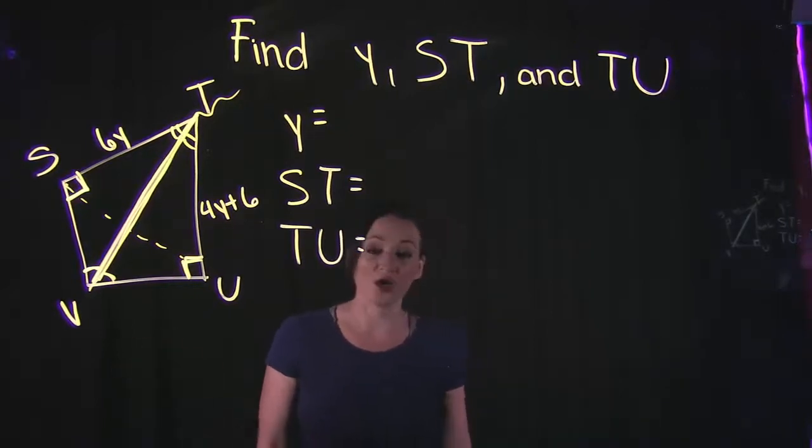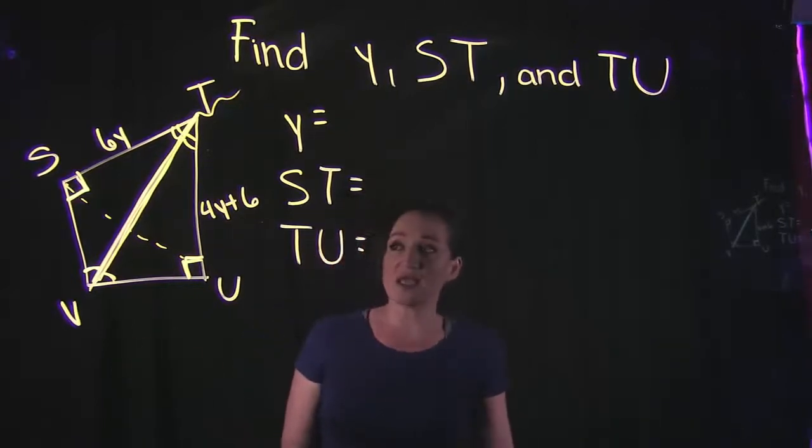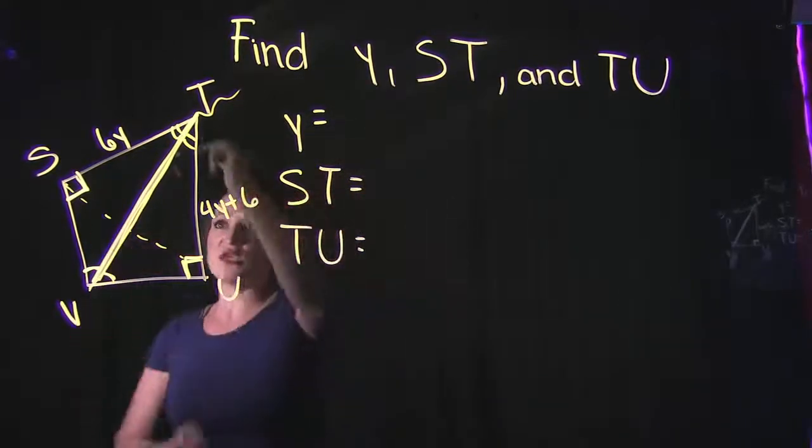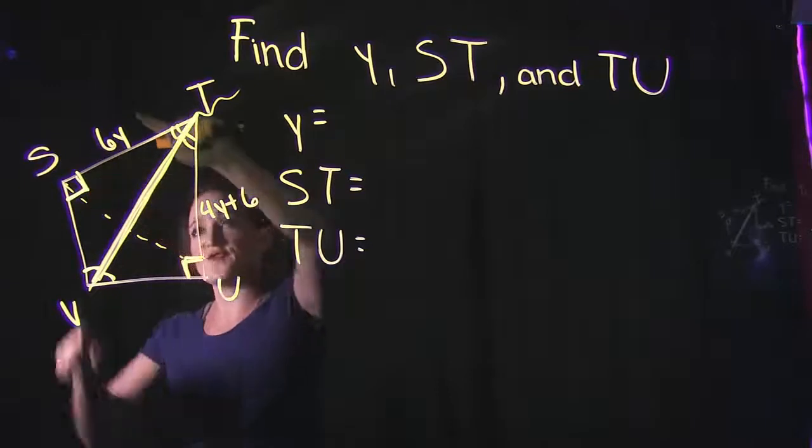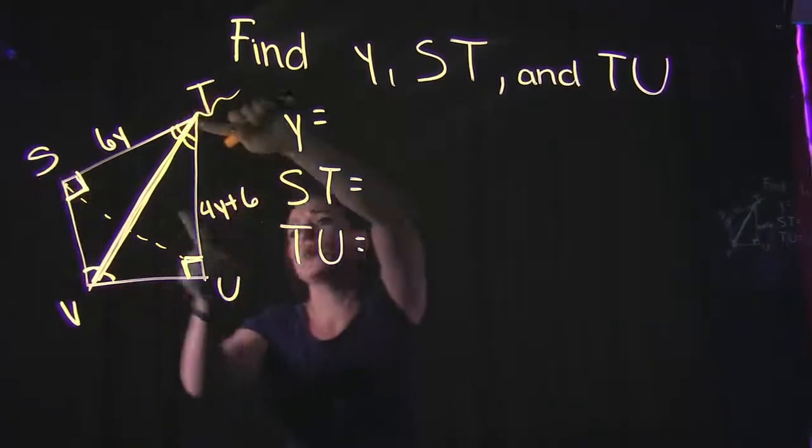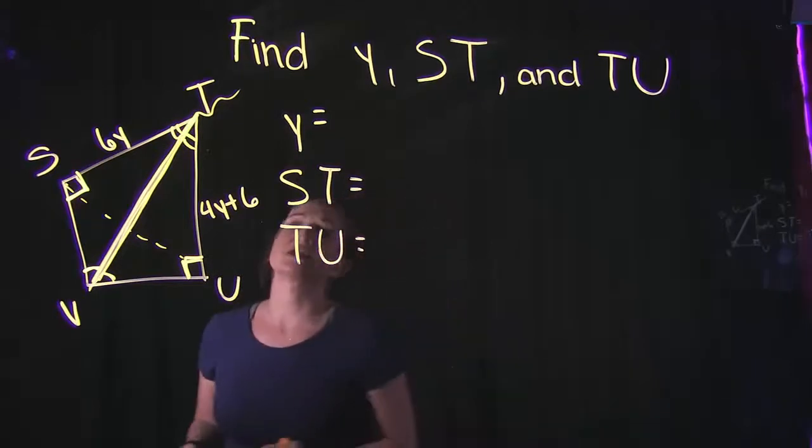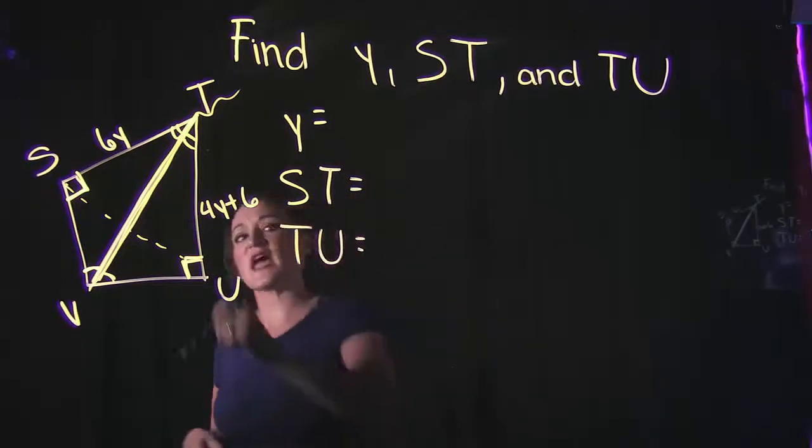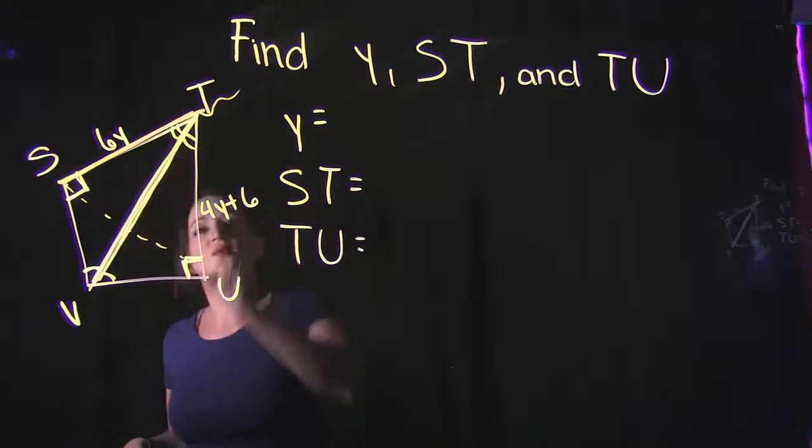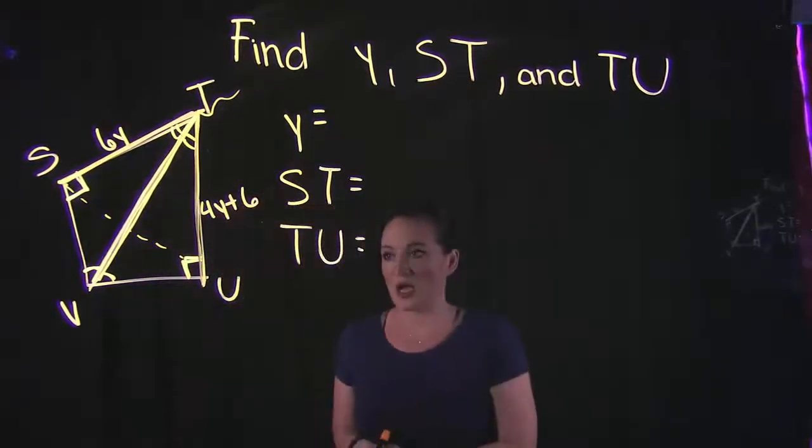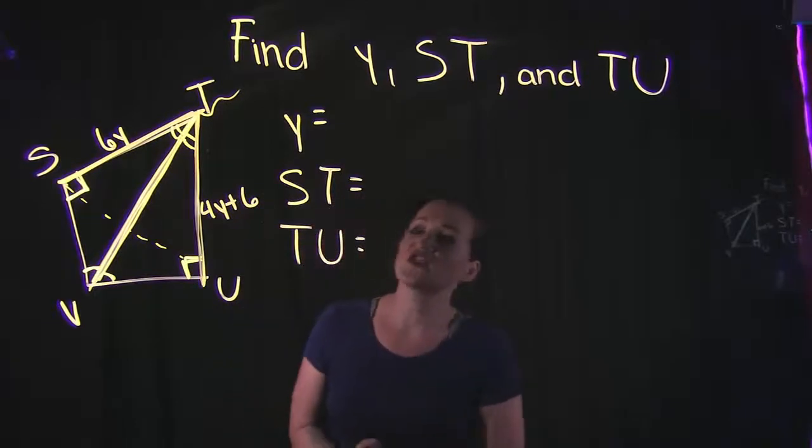How that's going to help us: we need to find y, so I see why—we have 6y for this side over here in the triangle, and we see that this side over here equals 4y plus 6. It's also asking us to find the side ST, so that's this side over here we're going to have to find, and then we also need to find TU. So those are the three things that we need to find here.